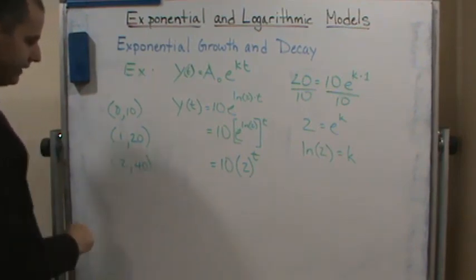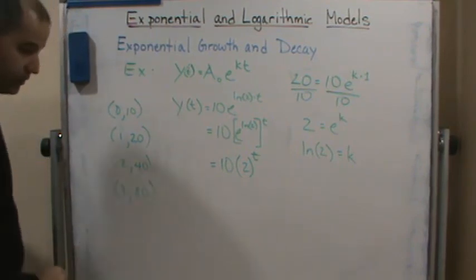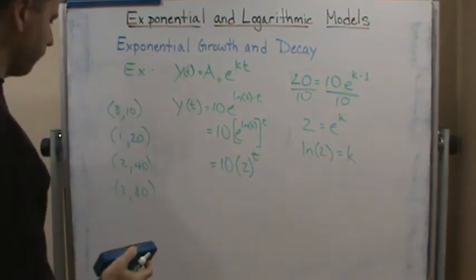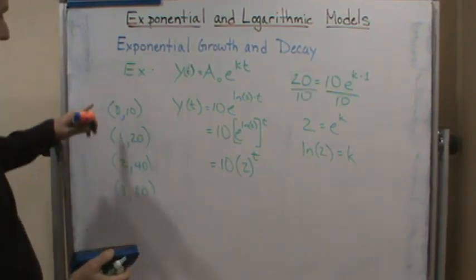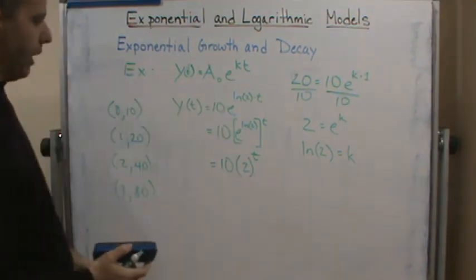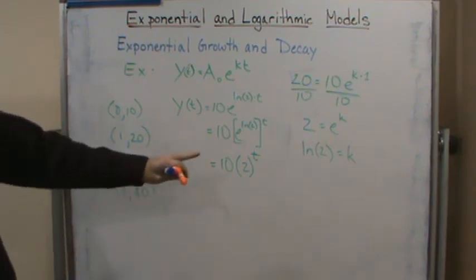2, 40. 3, 80. You get the picture. So now, by the way, knowing that the doubling time was one every hour and knowing the initial value would give me enough information to graph this thing. But here's the model.